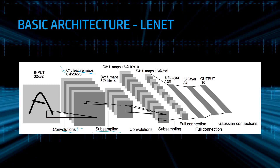Then we'll do the subsampling — in this case the pooling — and we'll reduce the width and the height of the images. As you have seen here, these are 14 by 14 and this is 28 by 28. Then we'll do another convolutional operation with this feature map and another time we'll do the subsampling. Finally, when we have small channels or images, we'll put all of them into the fully connected neural network — a normal neural network like the ones we've done in the previous videos.